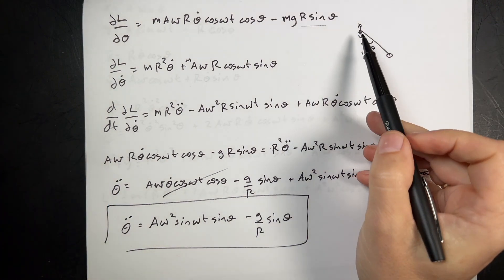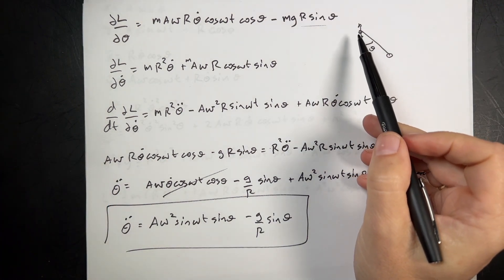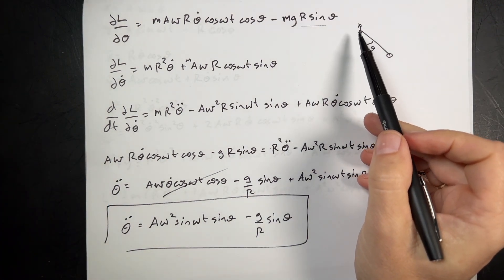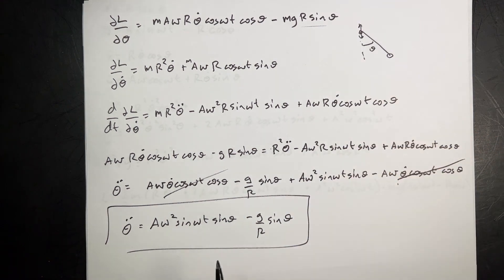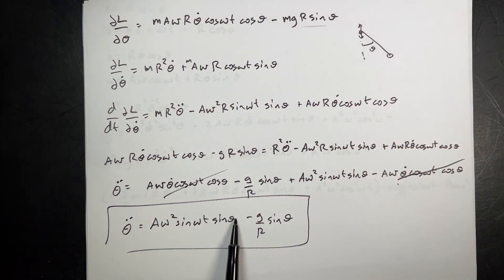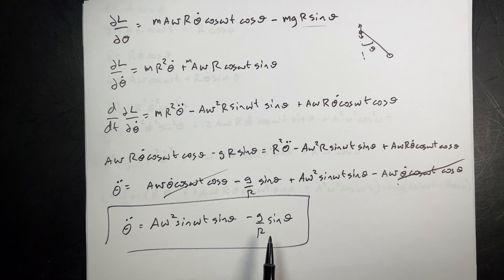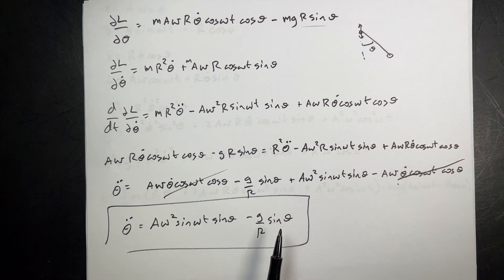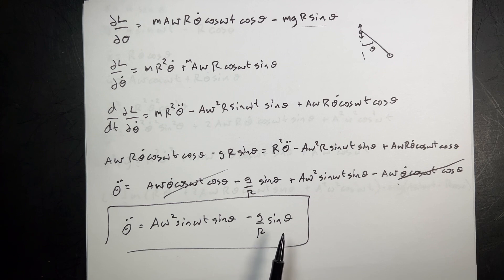Let's do a sanity check on our jiggle pendulum equation. If omega equals zero — if the pivot isn't jiggling — the first term goes away and I get theta-double-dot equals negative g over r sine theta. That's the equation of a pendulum. And if theta is small, sine theta is approximately theta, so that works out fine.